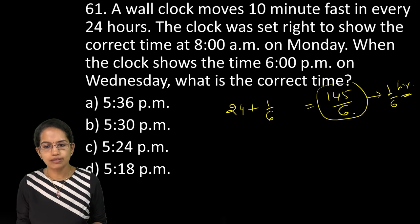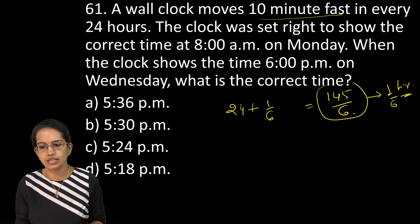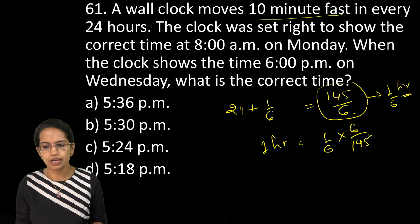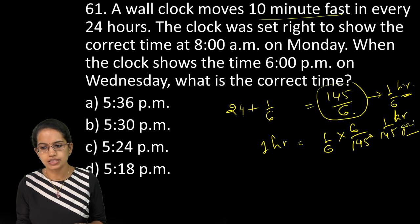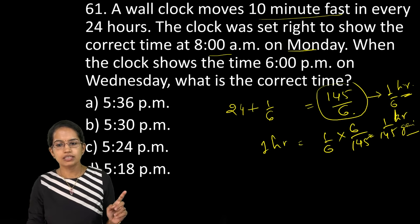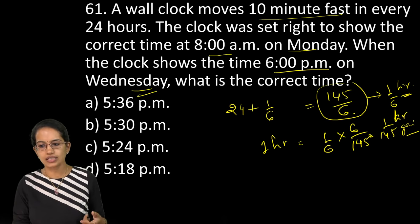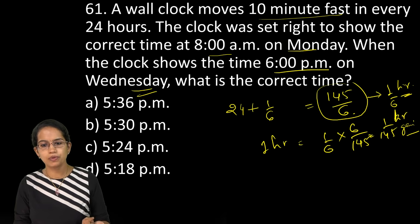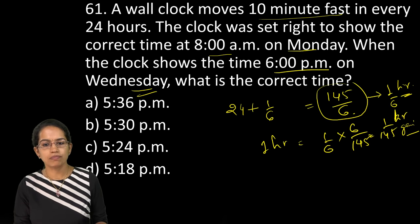So basically this gains how much? You have 1/6 hours, that is 10 minutes faster. So 1 hour would gain how much? It would be 1/6 multiplied by 6 divided by 145. So this would be 1/145 hours of gain that would be seen. Now from 8am Monday till 6pm Wednesday, how many hours are there?